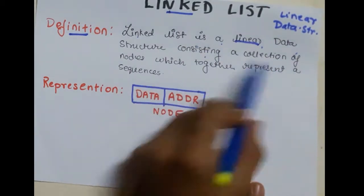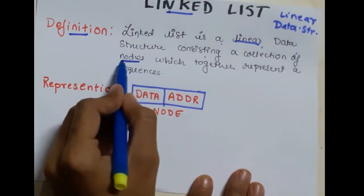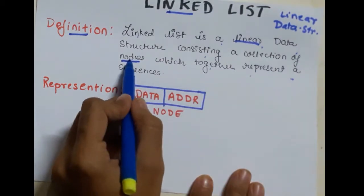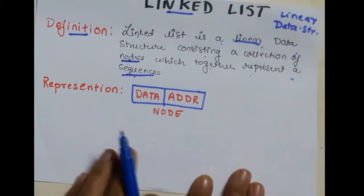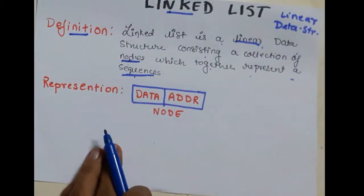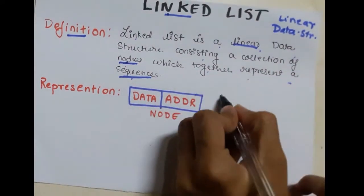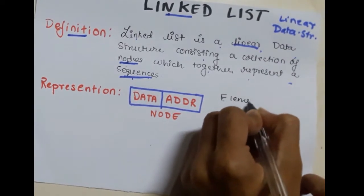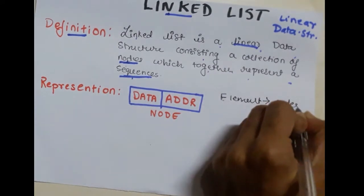Linked list consists of a collection of nodes which together represent a sequence. These nodes together make a sequence. The elements of a linked list are called nodes.